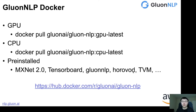We have also released the GluonNLP Docker. The reason for adding the Docker is that it's sometimes difficult for users to install some of the dependencies, for example Horovod. So we built a Docker image with pre-installed dependencies including MXNet 2.0, TensorBoard, GluonNLP, Horovod, and TVM. Users can simply call docker pull gluon-ai/gluonnlp:gpu-latest to get the Docker image and launch a development environment.